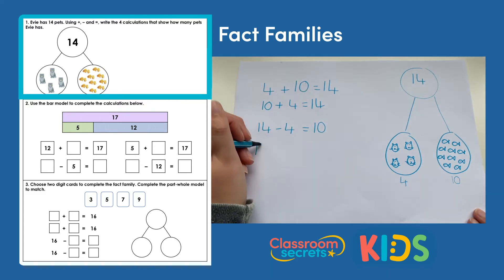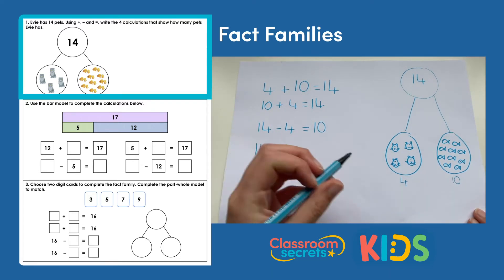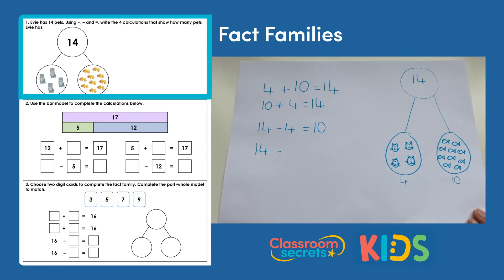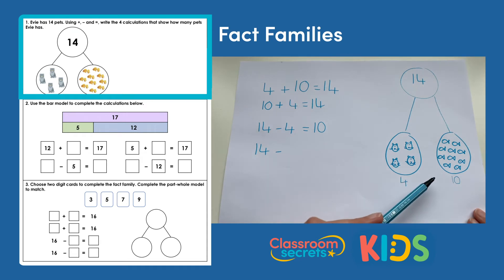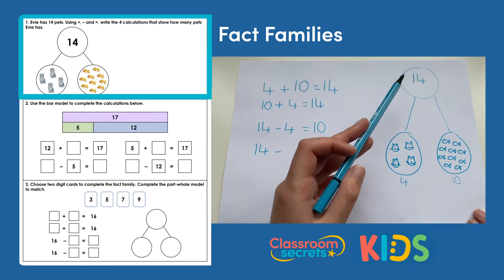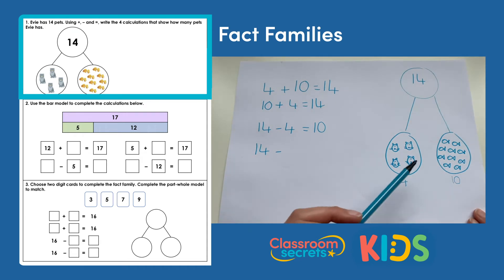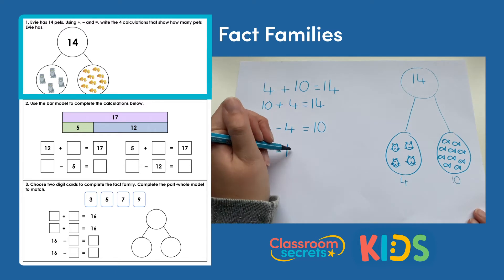Remember, we always start with the whole number — the biggest number. I took away 4 in my first calculation; now I'm going to take away 10. 14 take away 10 equals 4.